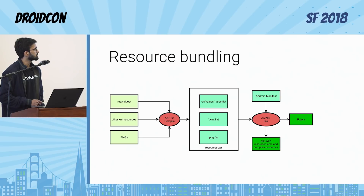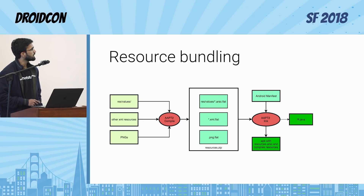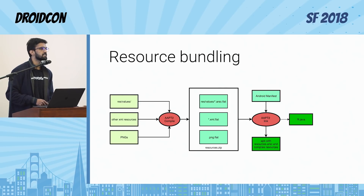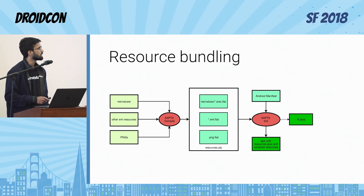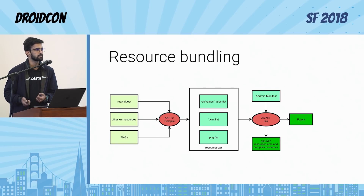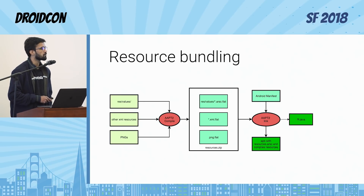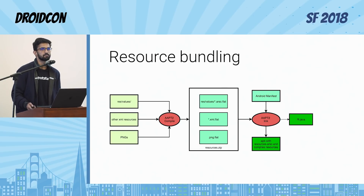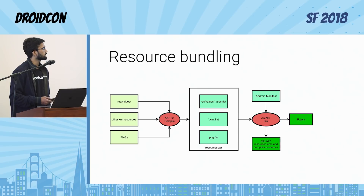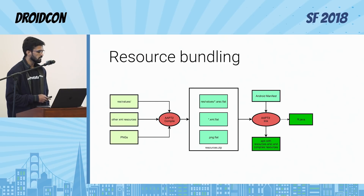We get this resource zip from the first phase of AAPT2. Then this resource zip is taken by AAPT2 for the linking phase, where it links all the resources and gives us the resources table. This resources table contains all entries for all resources present in our app. It also generates R.java, which we use to access resources for any of our needs.